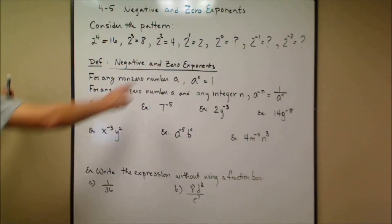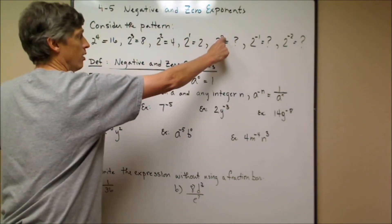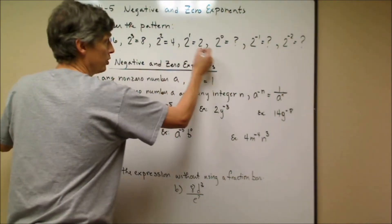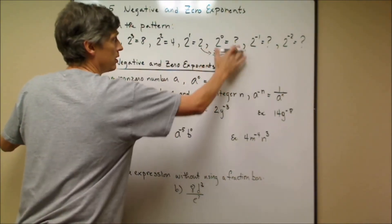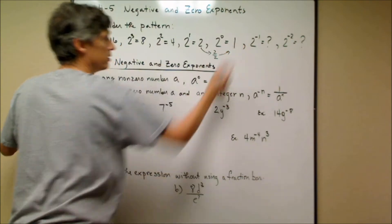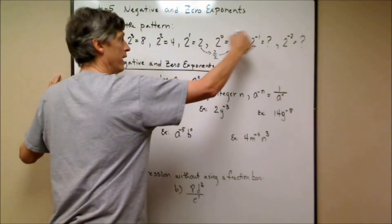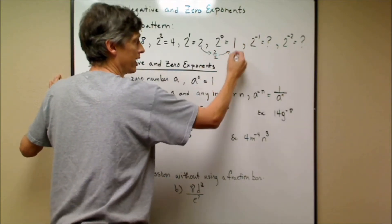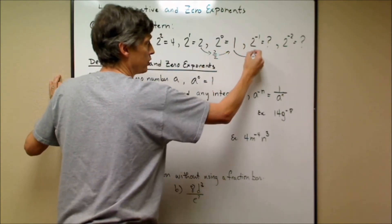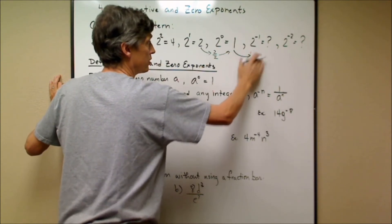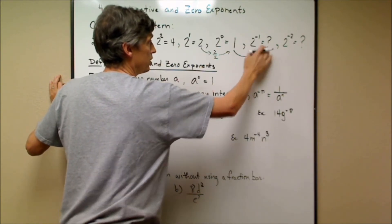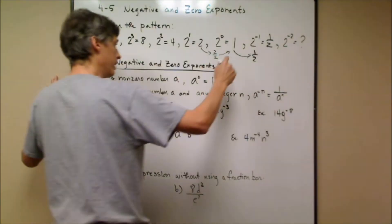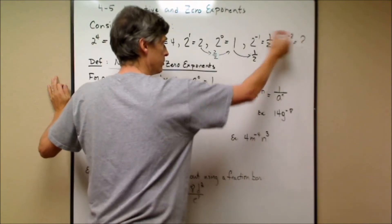If I continue that pattern and drop the exponent down by 1, I get 0 as an exponent. So if I take 2 and divide by 2, that should be 1 — that's different. If I subtract again and go from 0 to negative 1, then 1 divided by 2 gives me 1 half.